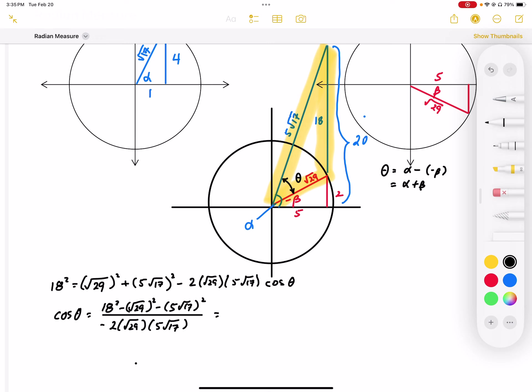Okay, so working this all out, in the numerator I end up with negative 180. And this works out to be negative 10 square root of 493.